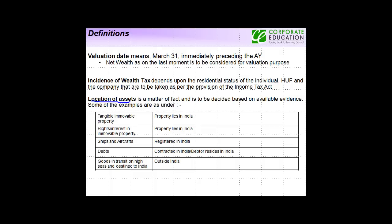When you compute wealth tax, you take the assets and subtract the liabilities. So which liabilities are to be excluded and which assets are to be included is very important. There are general rules regarding which assets are to be included depending on residential status. Location of asset is a matter of fact — if an asset is in India, it is in India. It's a fact whether the asset is lying in India or not.